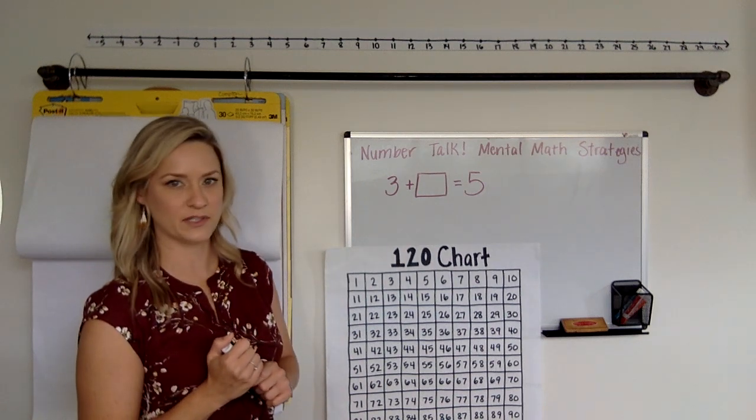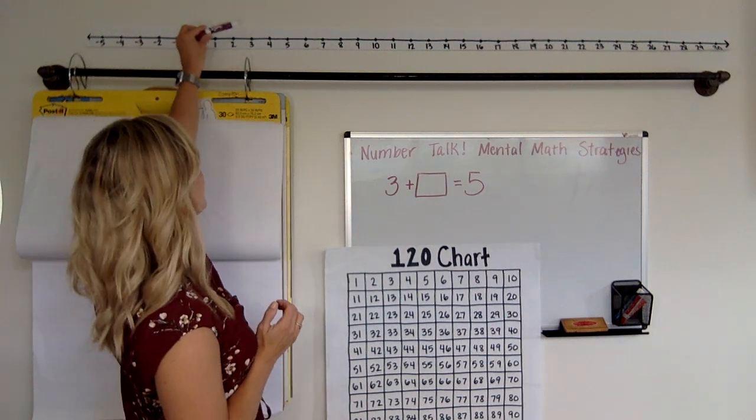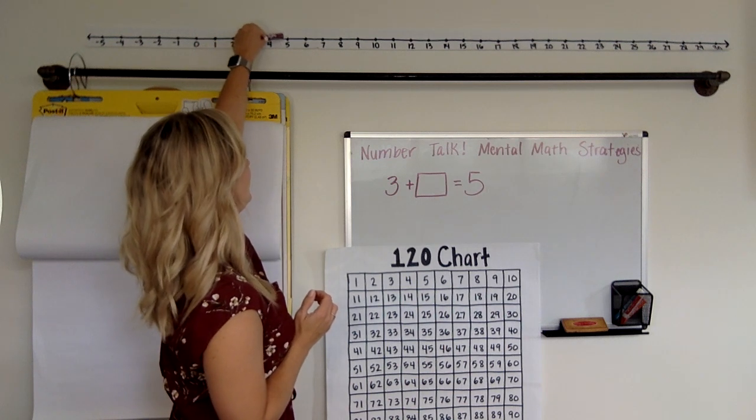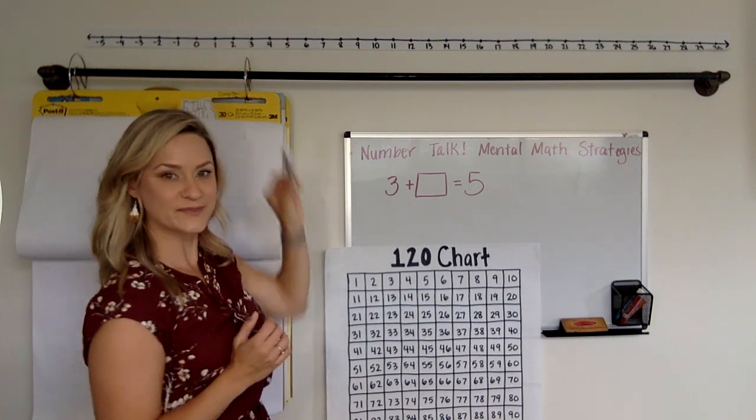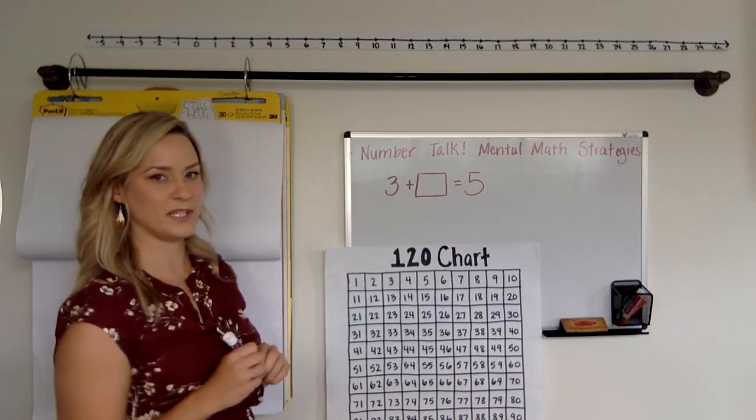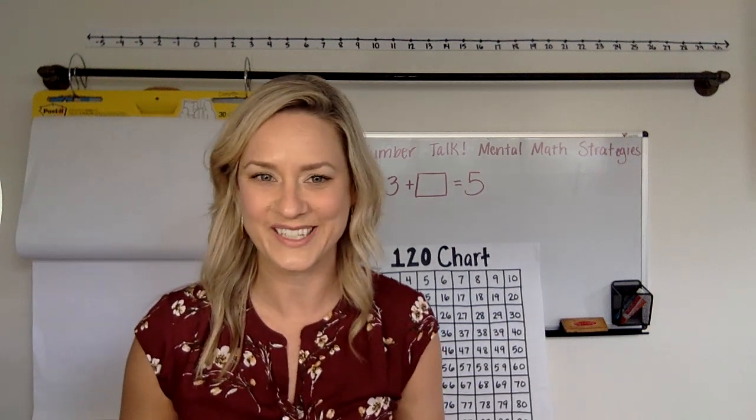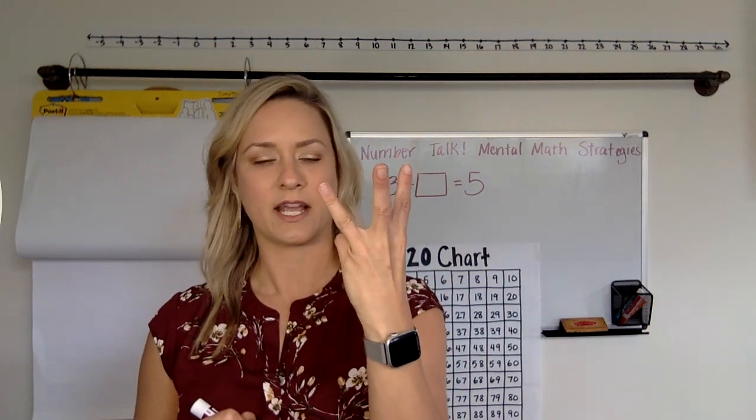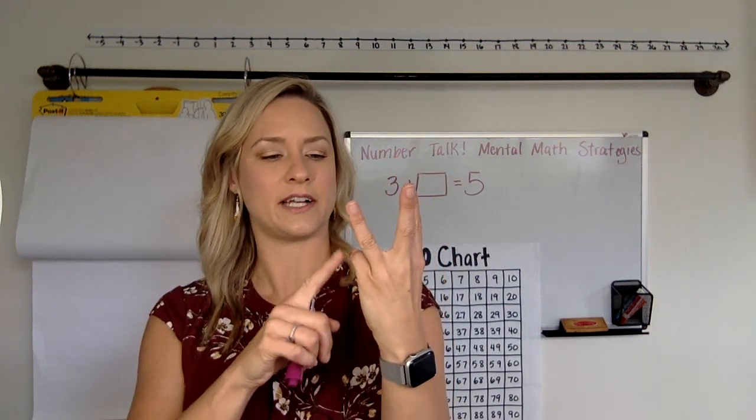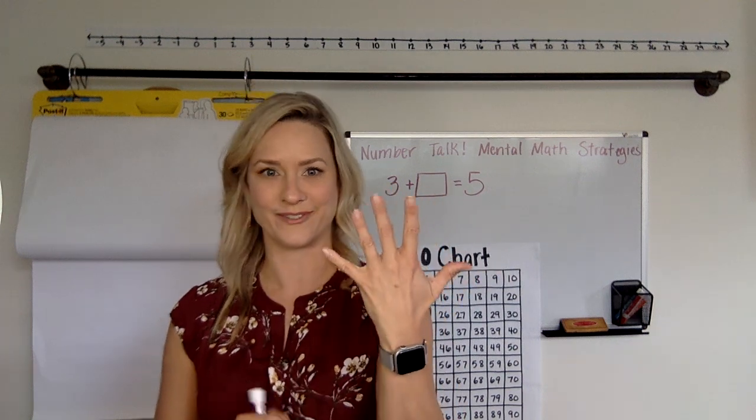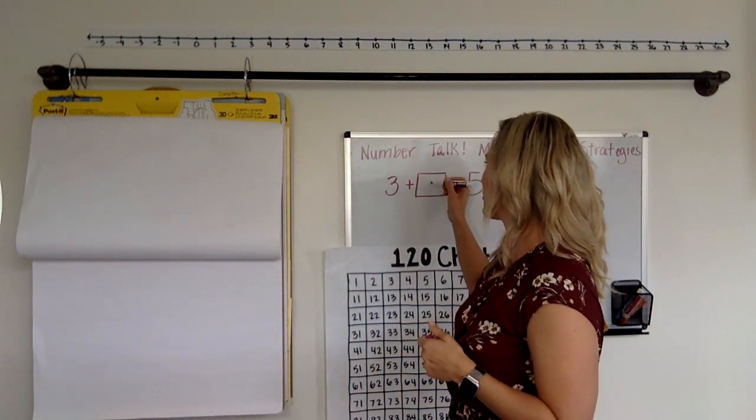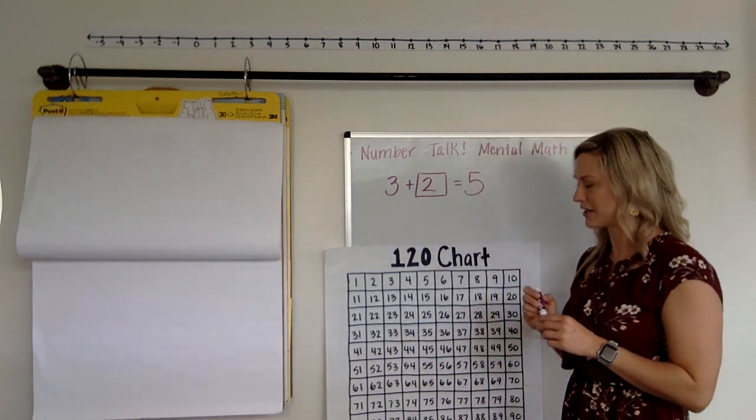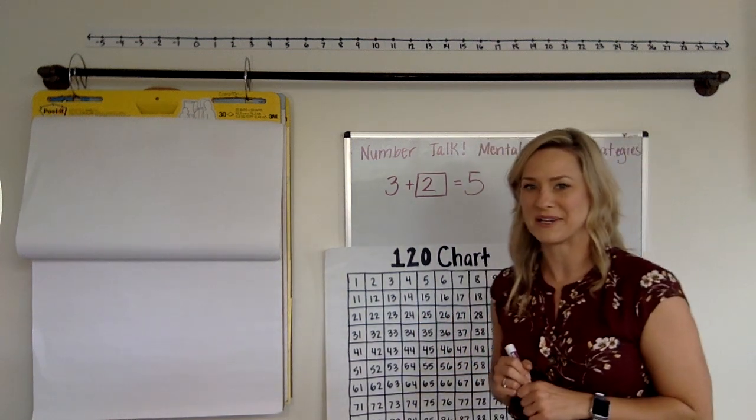So maybe some of you used our 120 chart. 1, 2 hops to get to 5. Maybe some of you even saw, ooh, there's a number line up here. Maybe some of you started at 3 and hopped to 5 two times. Or maybe some of you even used your fingers. So did anyone go like this and then figure out you had to add 2 more to get to 5? All right. So you were right. The answer is 2. 3 plus 2 equals 5. All right. Let's try another one. Are you guys ready?